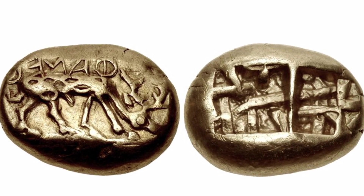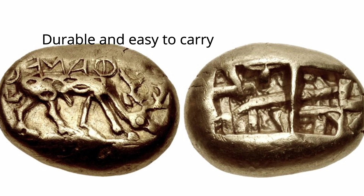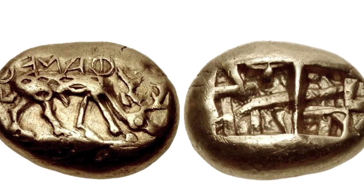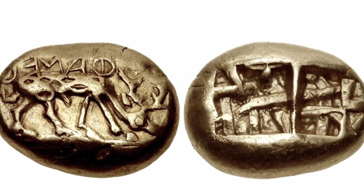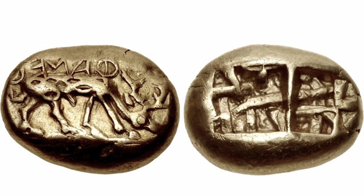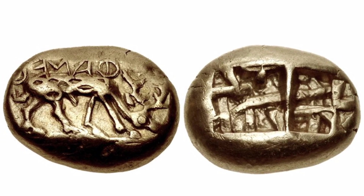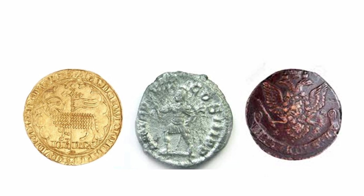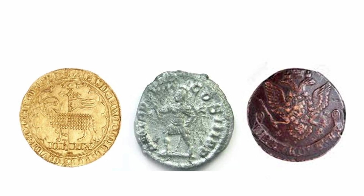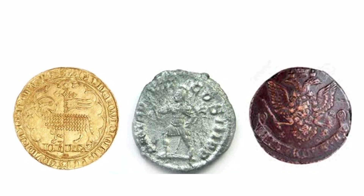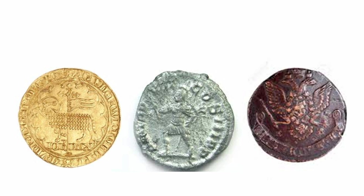Coins were preferred because they were durable and easy to carry. Coins of those times were irregular in shape and stamped with rough designs. The money value of a coin depended on the metal from which it was made. Coins were mostly made of gold, copper, and silver because they were precious and durable.